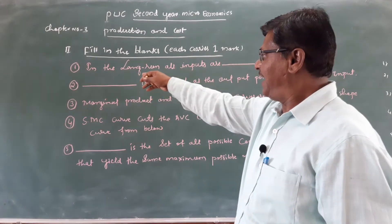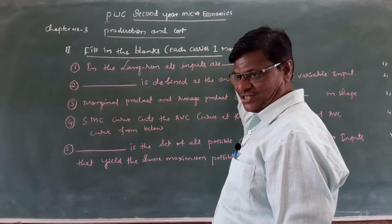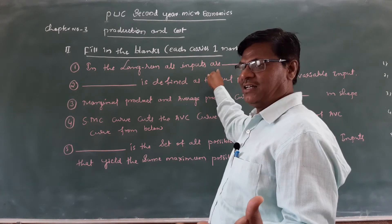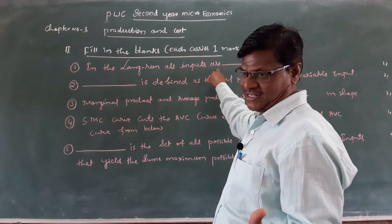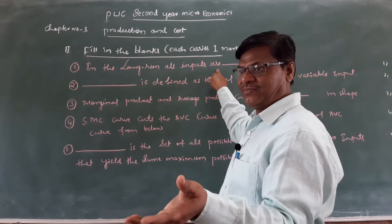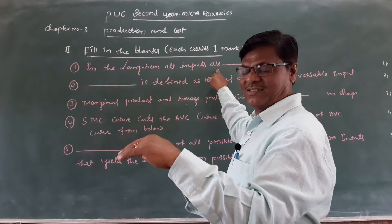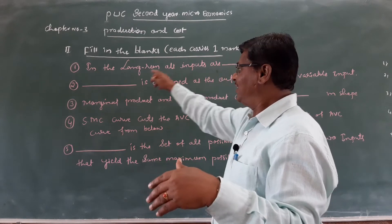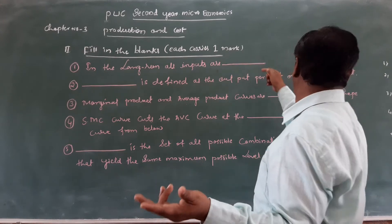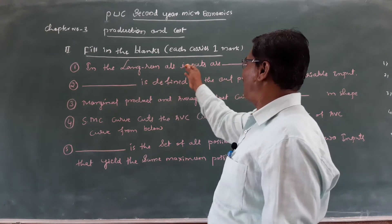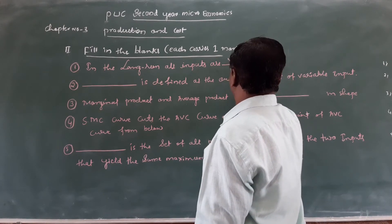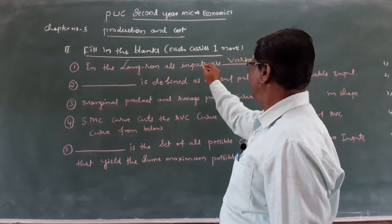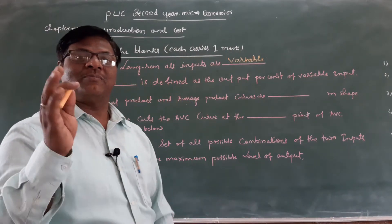Answer to question 1: In the long run, all inputs are dash. In the short period, all inputs cannot be variable. But in the long run, all inputs are variable. The answer is: in the long run, all inputs are variable.